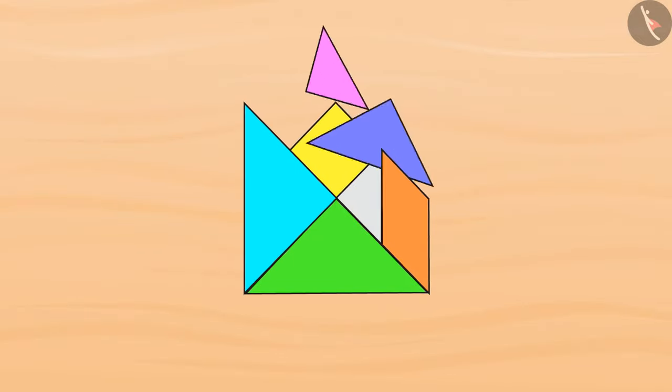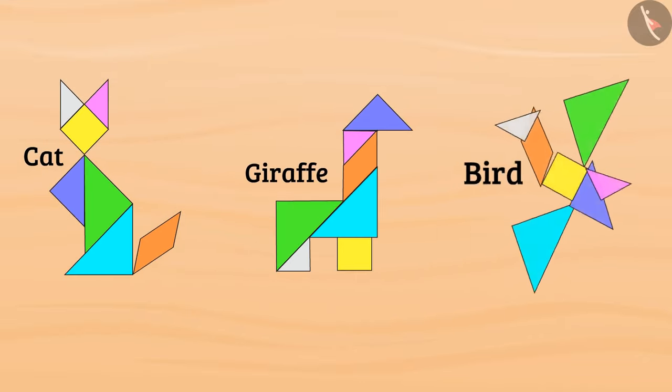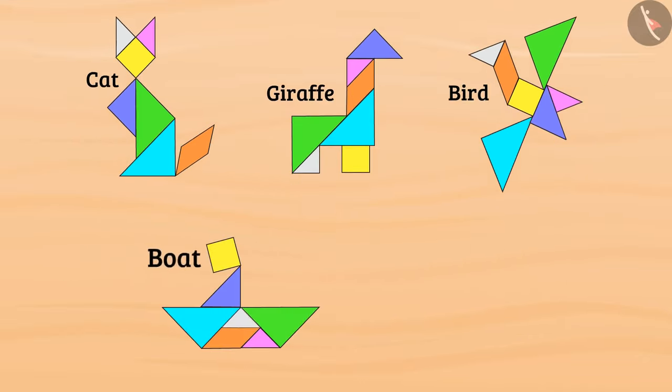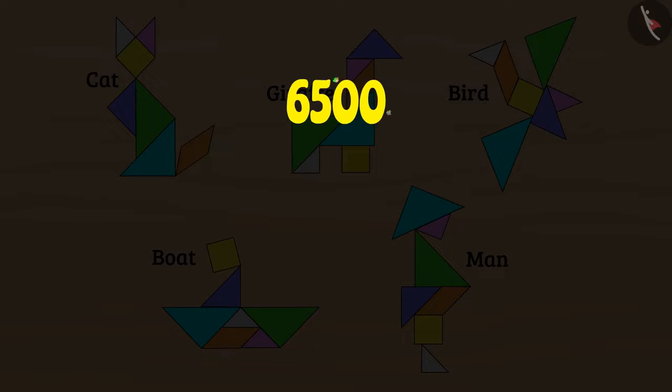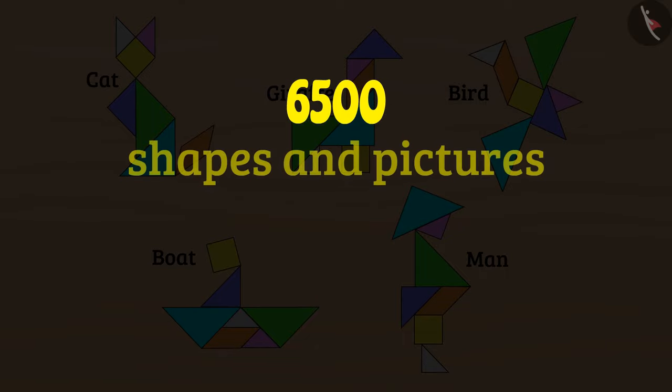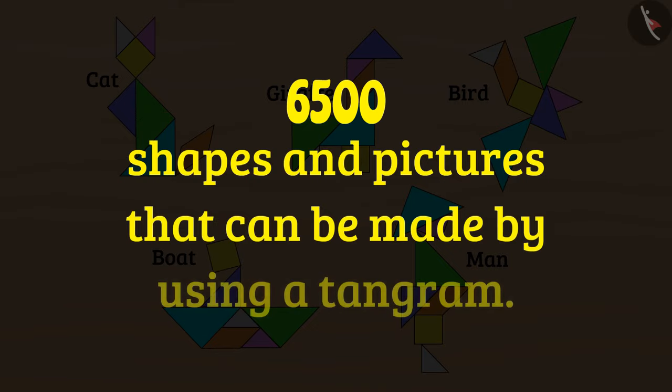And like this, we can arrange these pieces to make a cat, giraffe, bird, boat, and a man with a Tangram. There are over 6500 shapes and pictures that can be made by using a Tangram.